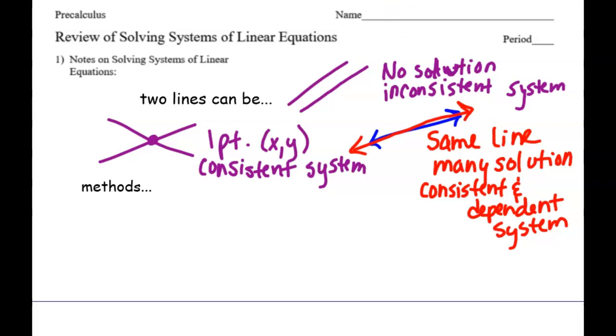That is called a consistent and dependent system. Again, I'm exposing these to you, but I'm not going to quiz you on that vocabulary. The methods we're going to talk about today are: first, graphing two lines and finding the ordered pair where they intersect.